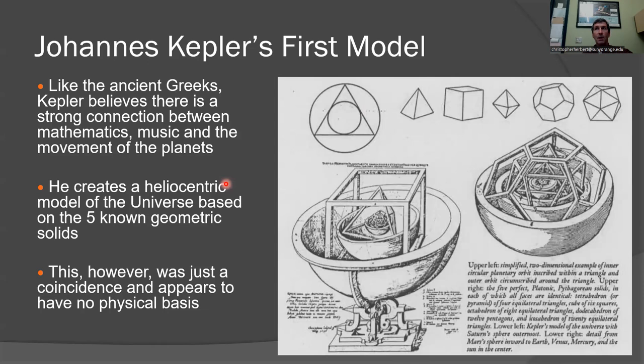So Rudolf did something that was very interesting. He took the younger Kepler, who was pretty respected in his own right, and made him Tycho's assistant. Basically, I wouldn't call it a spy, but basically Kepler was the insurance policy.